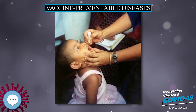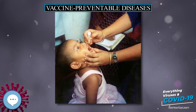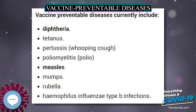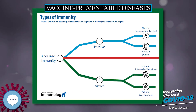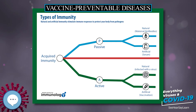Vaccine Preventable Diseases. A vaccine-preventable disease is an infectious disease for which an effective preventive vaccine exists. If a person acquires a vaccine-preventable disease and dies from it, the death is considered a vaccine-preventable death.